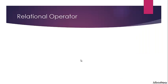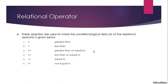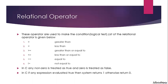Relational operators are used to compare two or more values. There are six relational operators in C. These operators return true or false, so they are also known as Boolean operators. In C, any nonzero value is treated as true and 0 is treated as false. If an expression evaluates to true, it returns 1; otherwise it returns 0.